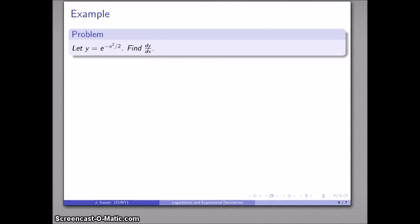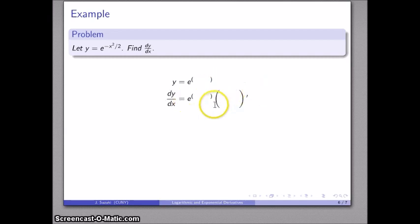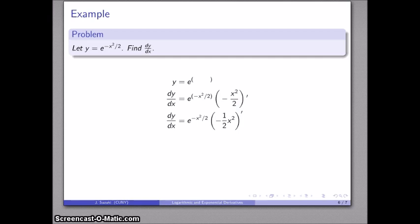It's really not too much different if we have a more complicated function. Here's e to the minus x squared over 2. Take x, square it, change the sign, divide by 2, e raised to that number. The last function is e raised to the, so when we find the derivative, this is an e to the type function. The derivative — world's easiest derivative — same thing, times the derivative of whatever was in the parentheses. Put things back where you found them. The derivative of minus x squared over 2 is minus one half times 2x, and we do a little simplification to make things look nicer.